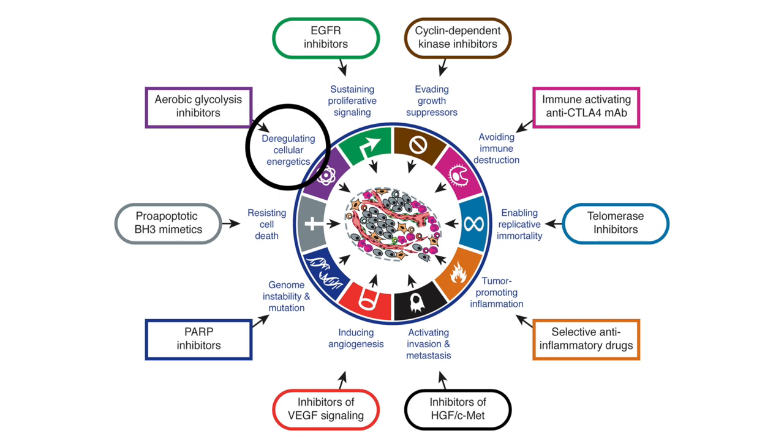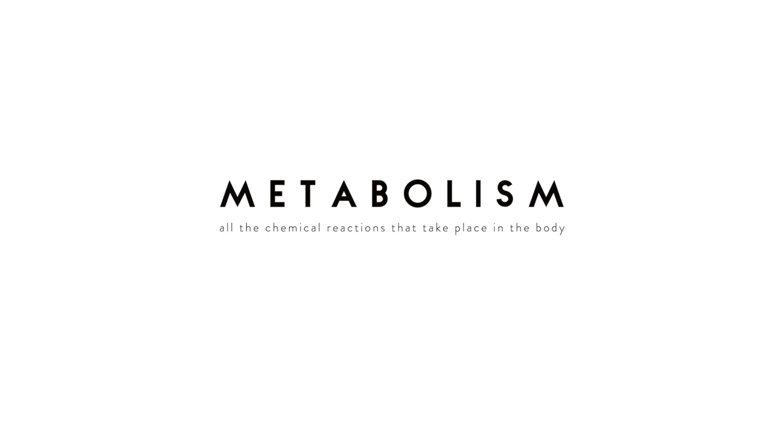Hallmark ten — the final hallmark — is deregulating cellular energetics. Cancer cells reprogram their metabolism to grow faster or survive in certain conditions. For example, ovarian cancer cells scavenge lipids from surrounding fat cells (adipocytes). Something seen in many cancers is the Warburg effect: cancer cells show a very high avidity for glucose, taking up large amounts and feeding it into respiration to produce ATP.